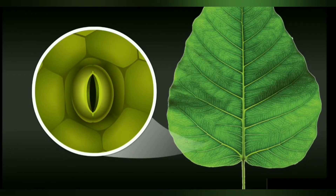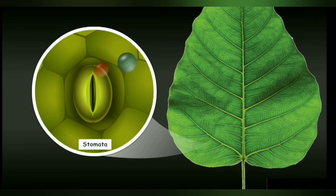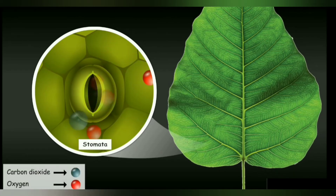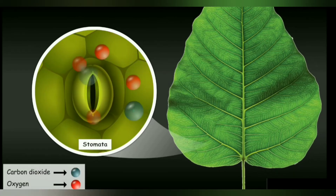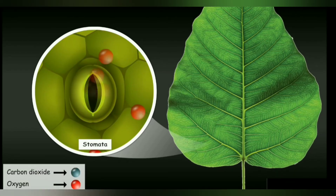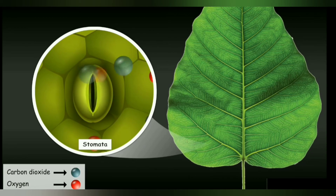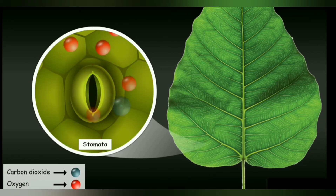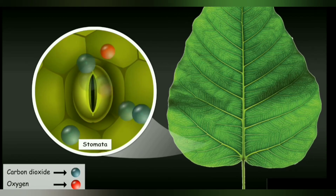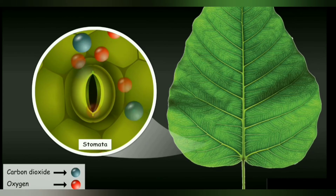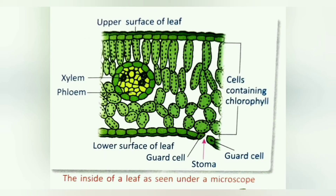The lower surface of the leaves has many tiny openings called stomata. These stomata help in the exchange of carbon dioxide, oxygen gases, and water vapor between the leaf and the surrounding air. The inside of the leaf shows many layers of cells, which can be seen under a microscope.